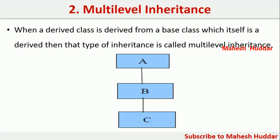When it comes to multi-level inheritance, in this example, B is inheriting the properties of A — here A is the superclass and B is the base class. And the properties of B are inherited in C, where B is a superclass and C is a derived class. This is called multi-level inheritance.